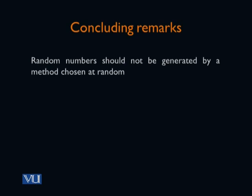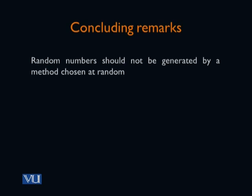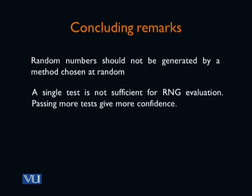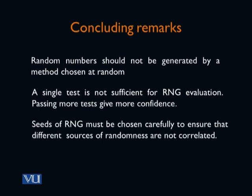Let me now conclude this lecture. We have seen that it is a substantial undertaking if we want to construct a good random number generator — a method chosen haphazardly will typically not have good properties. We have also seen that it is very important to do proper testing of your random number generators and to use good practices as defined in the latest papers, so that we do not use a flawed random number generator. Thank you for joining.